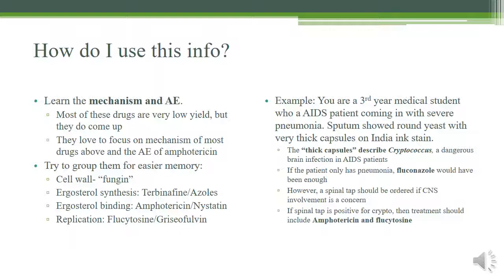Focus on the mechanism and adverse effects. Know the mechanism for all these drugs — not extremely high yield, but mechanisms do come up. Adverse effects, especially for amphotericin, are most important given its use in immunosuppressed and AIDS patients. Group the drugs: the '-fungins' all target the cell wall; ergosterol synthesis inhibitors together; ergosterol binders like amphotericin and nystatin; and replication inhibitors like flucytosine and griseofulvin.